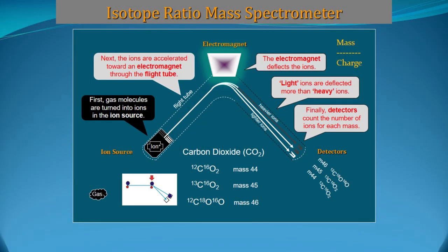Now this is the isotope ratio mass spectrometer. The gas we have separated enters into the ion source where ions are formed. We use acceleration voltage to push all these ions into the magnetic field. At the magnetic field, ions are separated by their mass-to-charge ratio and collected in different collectors. In the case of CO2 gas, we measure mass 44, 45, and 46 in three different cups.